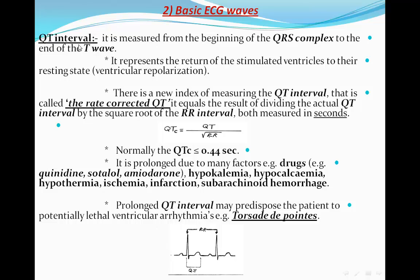The QT interval is measured from the beginning of the QRS complex to the end of the T wave. Since we say interval, we include waves in our measurements — therefore the QT interval encompasses the QRS complex, the ST segment, and the T wave. The QRS complex represents ventricular depolarization, while from the J point through the ST segment and T wave represents ventricular repolarization.